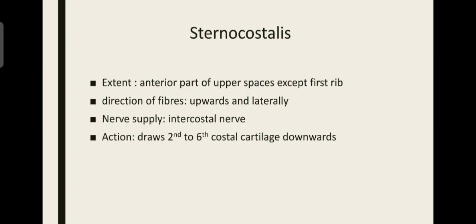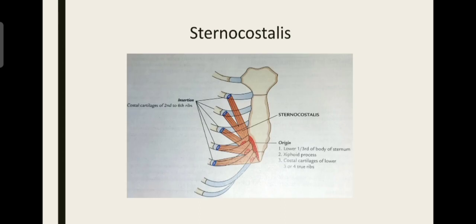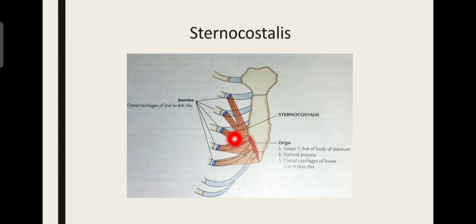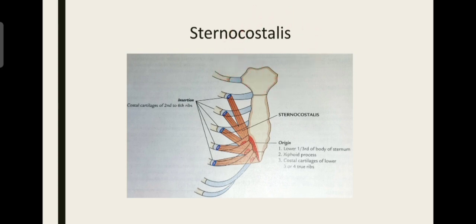Next is sternocostalis, another small muscle located anteriorly. The name 'sternocostalis' — sternum to the costal cartilage — itself gives an idea about where the muscle originates and inserts. The origin is from the lower sternum and xiphoid process, along with the costal cartilage of the lower three or four ribs. It inserts on the costal cartilage of the 2nd to 6th ribs. Since the sternum is present only anteriorly, this muscle is confined to the anterior region.